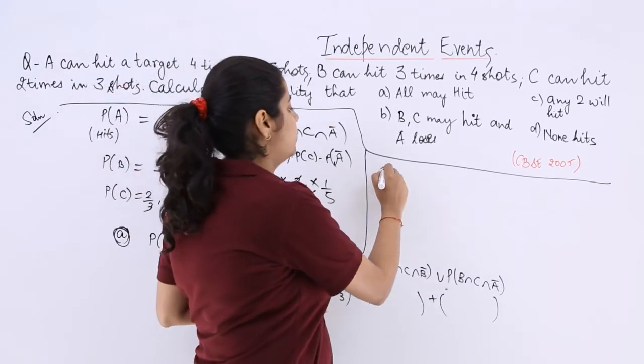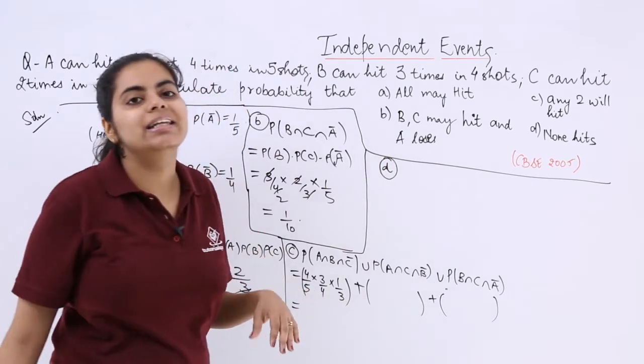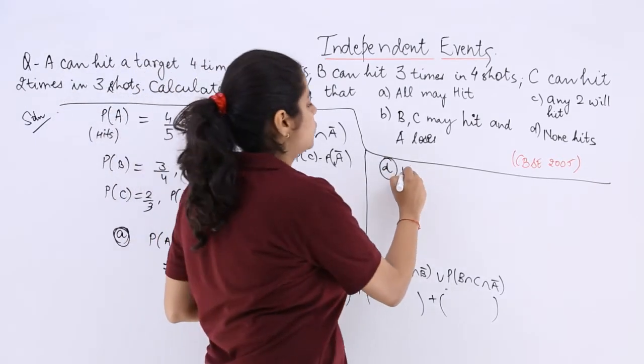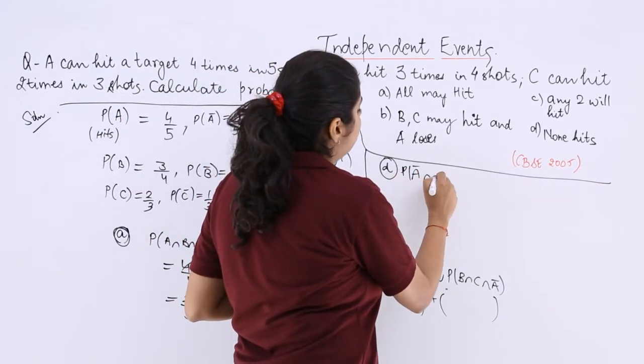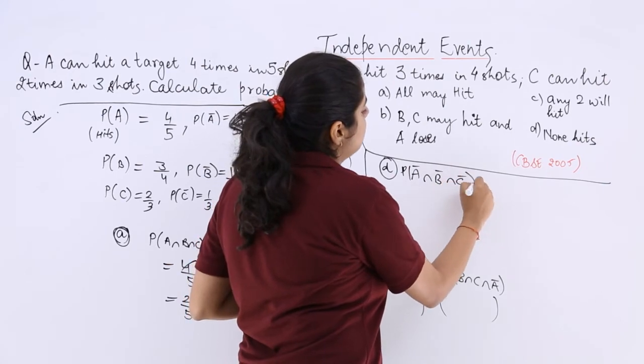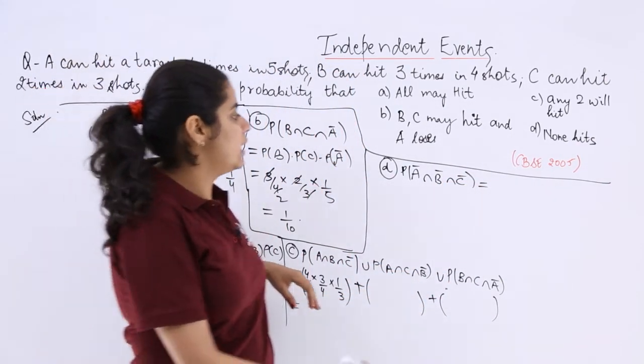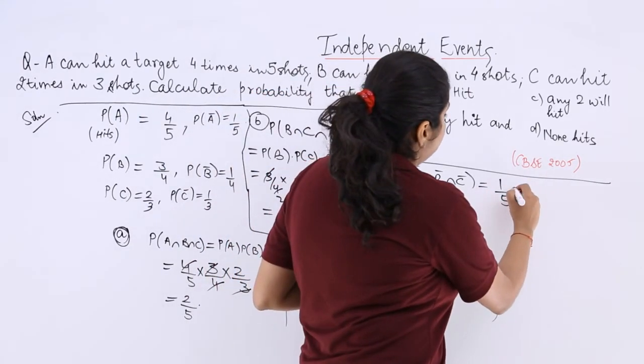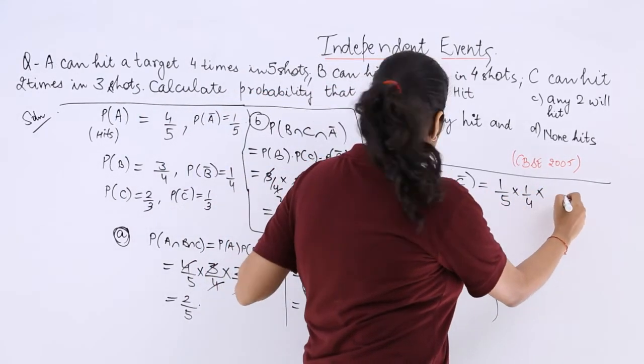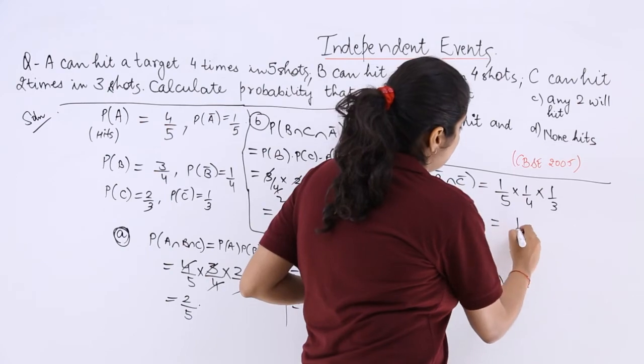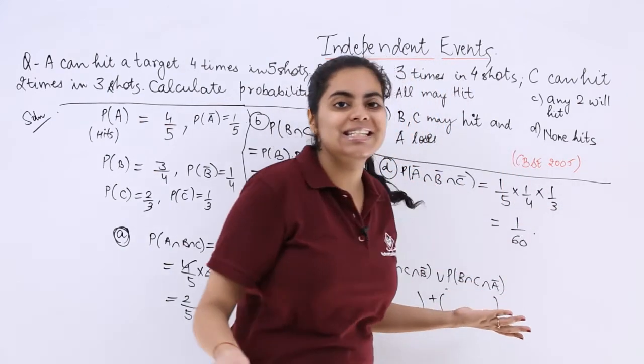The last part I am telling you, the last part is none hits. So nobody will hit. So that is probability A complement intersection B complement intersection C complement. What should be the answer like? 1/5 multiply by 1/4 multiply by 1/3 which is 1/60.